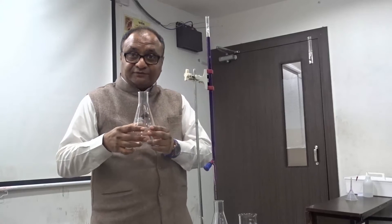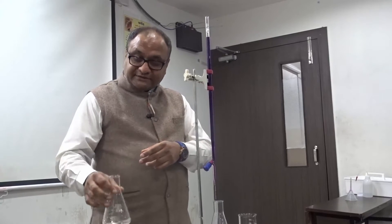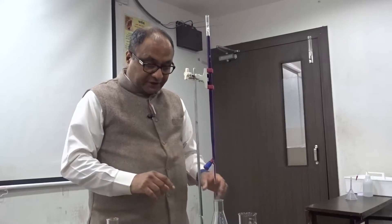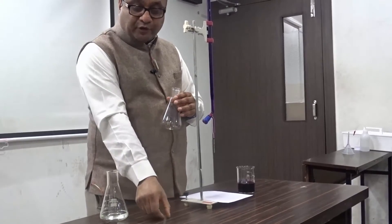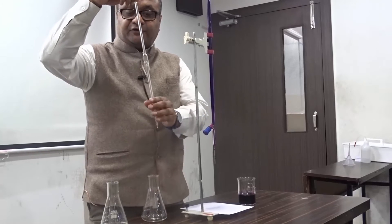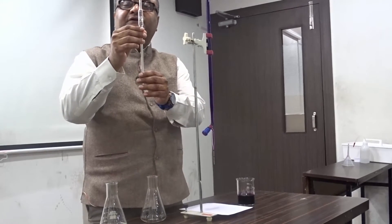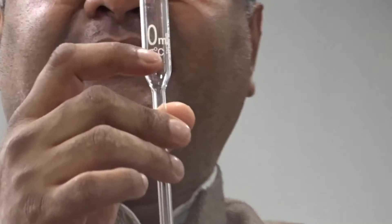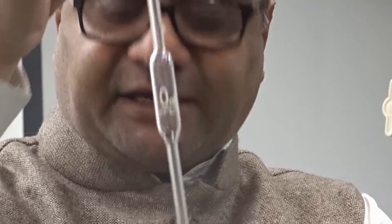In this titration, we will take a measured amount of ferrous ammonium sulfate into a conical flask, using an instrument called the pipette. If you zoom in, you will notice it says 10 ml — it is a 10 ml pipette. Once I take a solution in this pipette and transfer it, it will be exactly 10 ml.